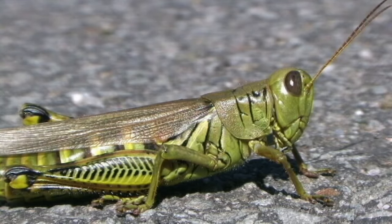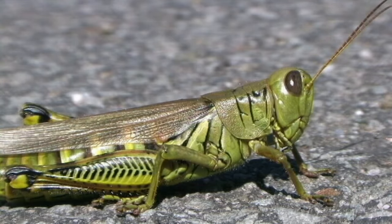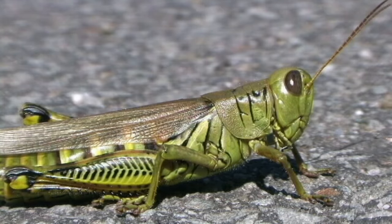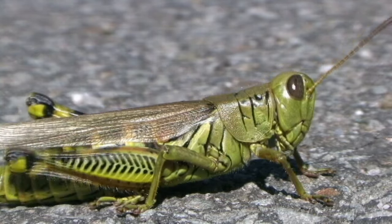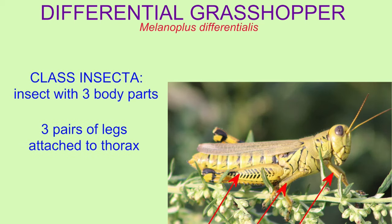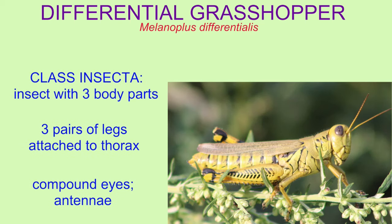Differential grasshoppers are clearly insects. They have three body parts — a head, thorax, and abdomen — three pairs of legs attached to the thorax, and other insect features such as compound eyes and antennae.